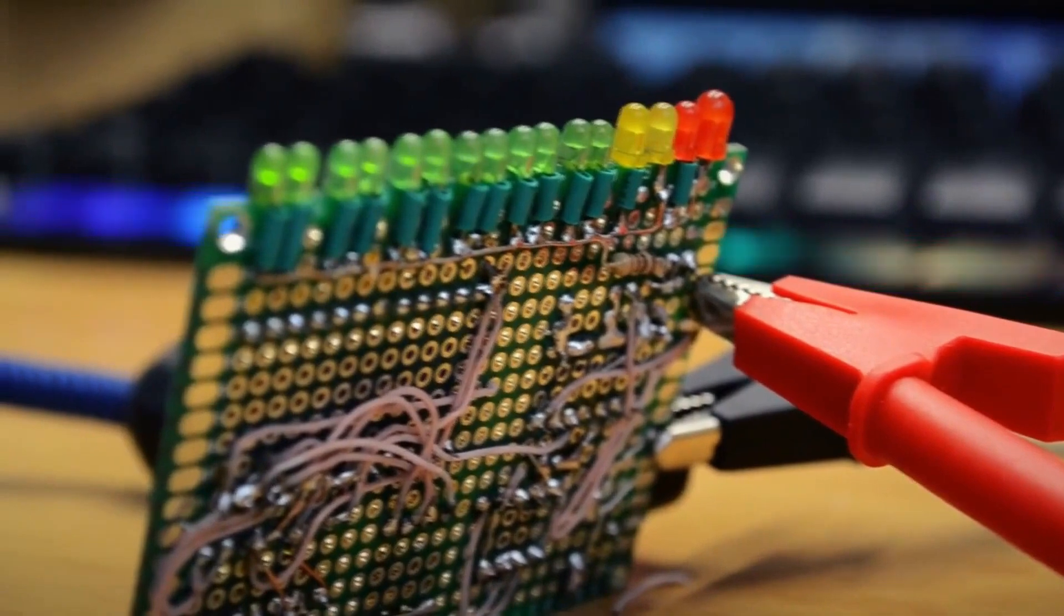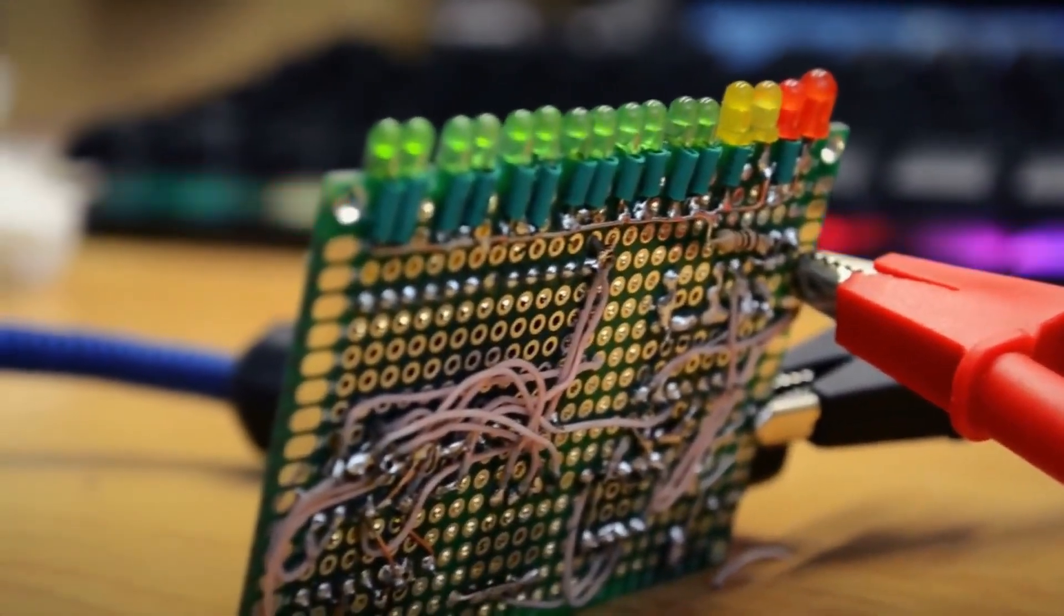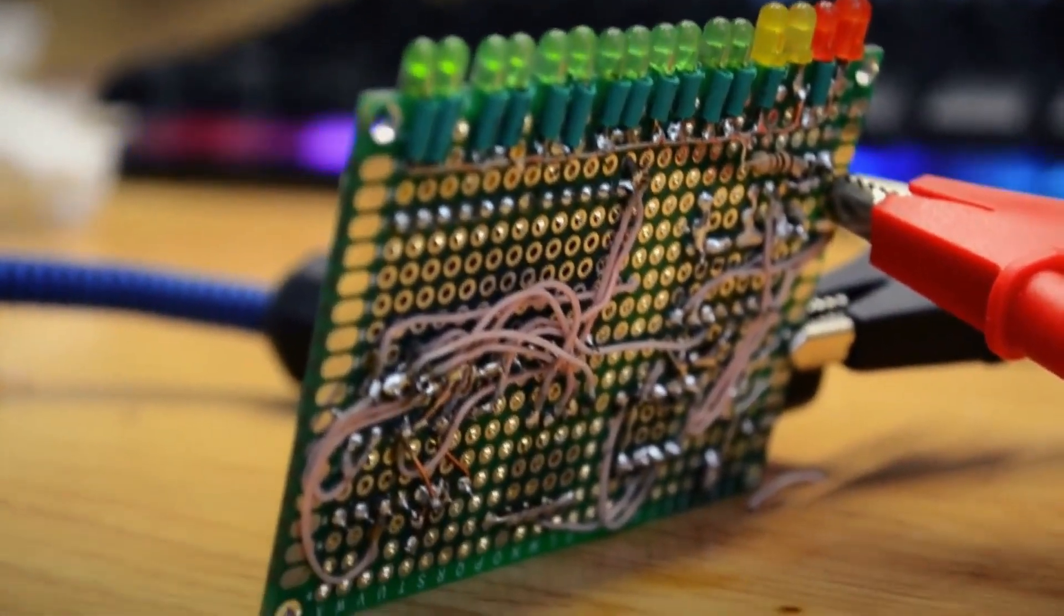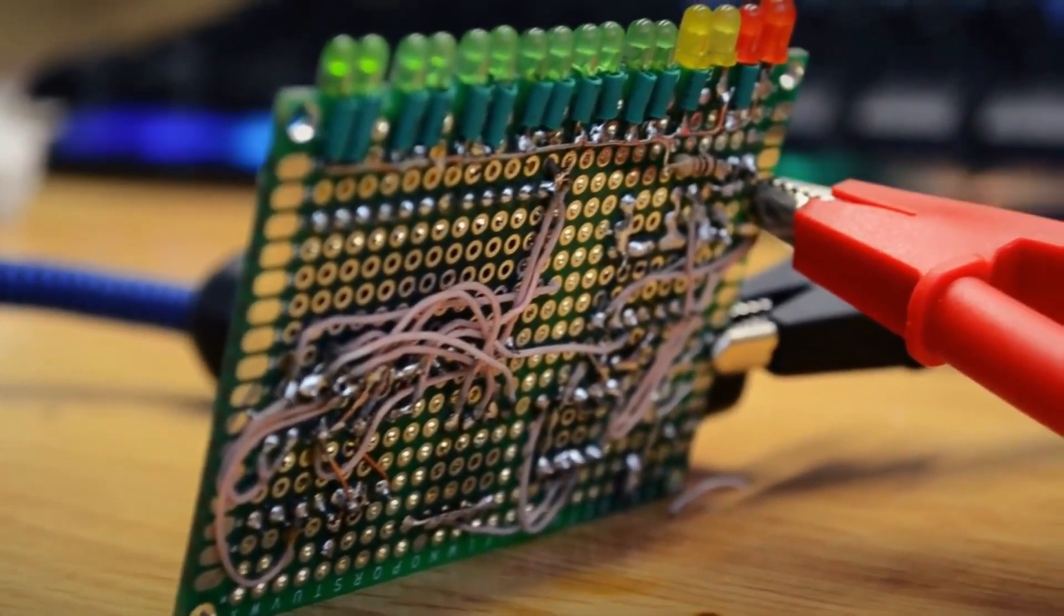We'll go over the circuit, assemble it, and test it. In general, you can come up with many variations of signal-level indicator circuits using discrete logic.